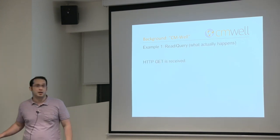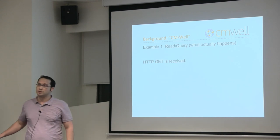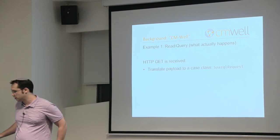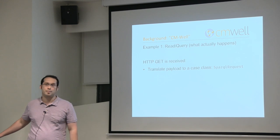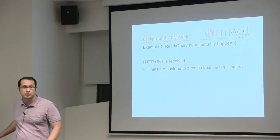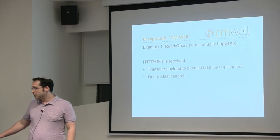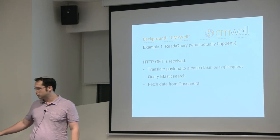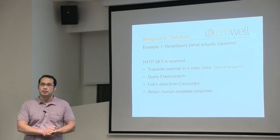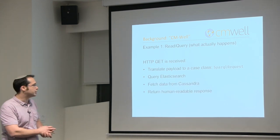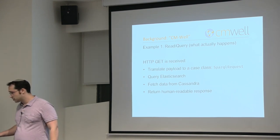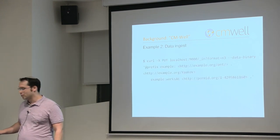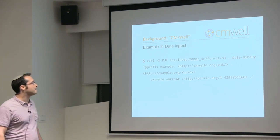Behind the scenes, an HTTP GET is received by the web server. We first convert the payload into a case class — in this case a SPARQL request — then query Elasticsearch, fetch data from Cassandra, and eventually return a human-readable response to the user.